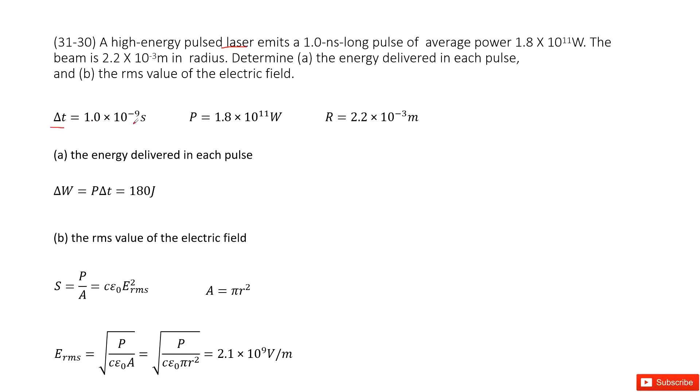1 nanosecond. And the power is also given, so write it there. This is average power. And then the radius of the beam is also given.